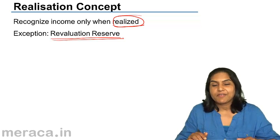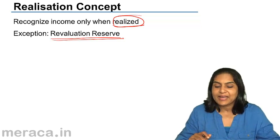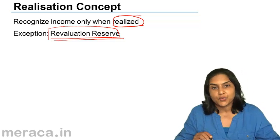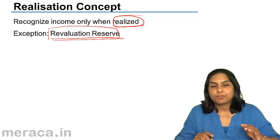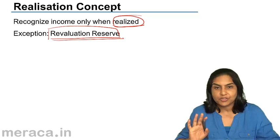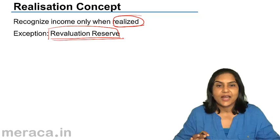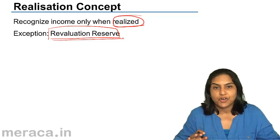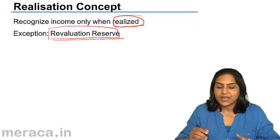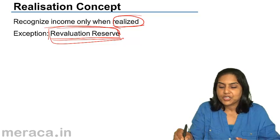Sometimes when the value of some asset changes to a large extent, we revalue the asset and create a revaluation reserve. Suppose we have land in our books at 10 lakhs and the actual worth of the land is 50 lakhs. We may revalue it and show the asset at 50 lakhs — an extra 40 lakhs — and in that case, we create an account called a revaluation reserve.